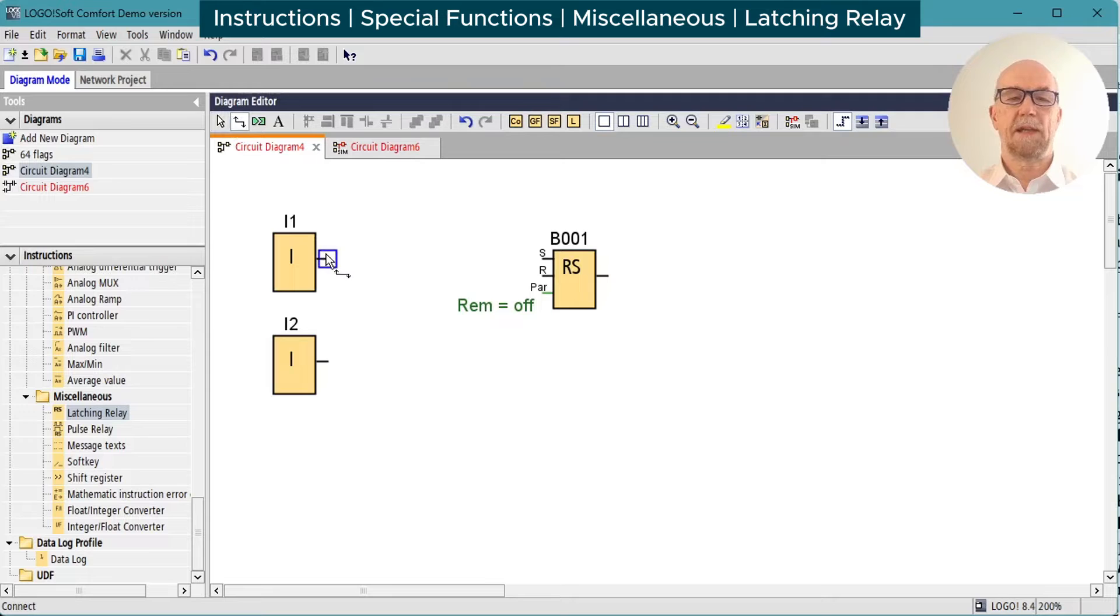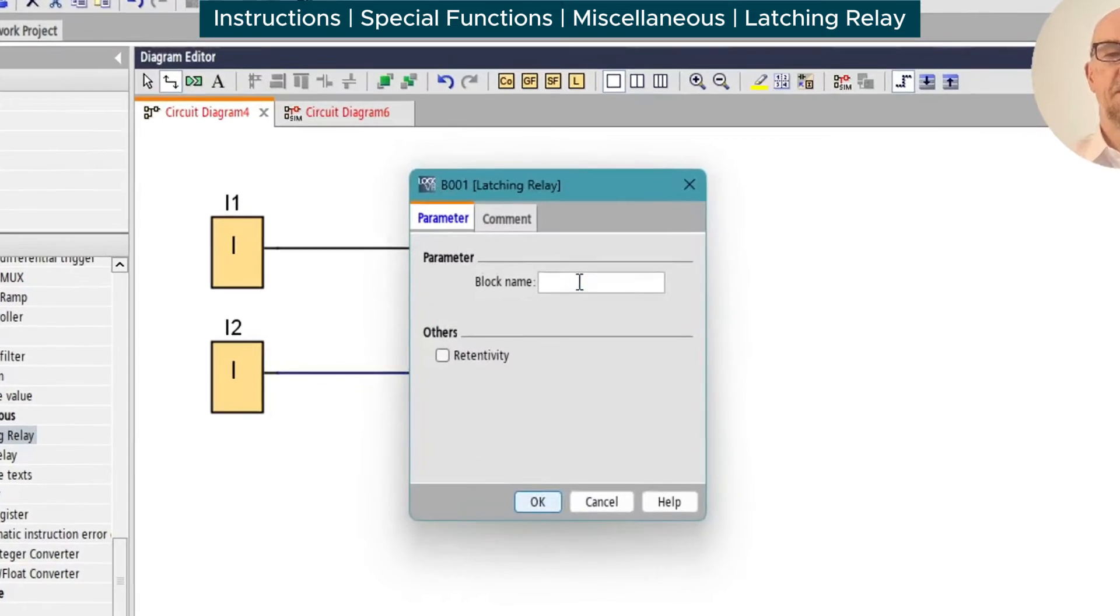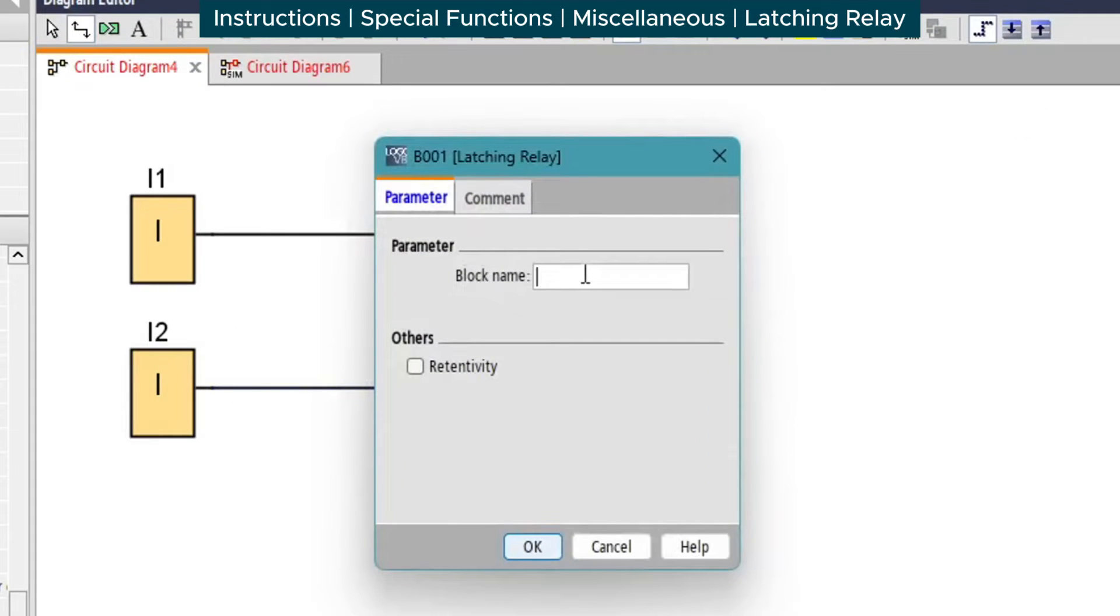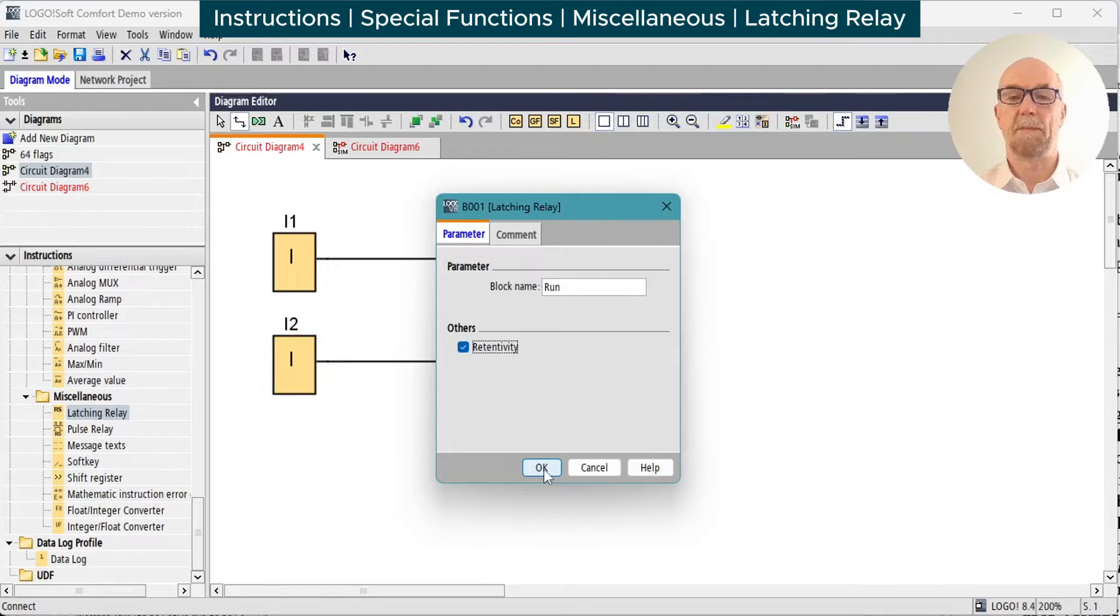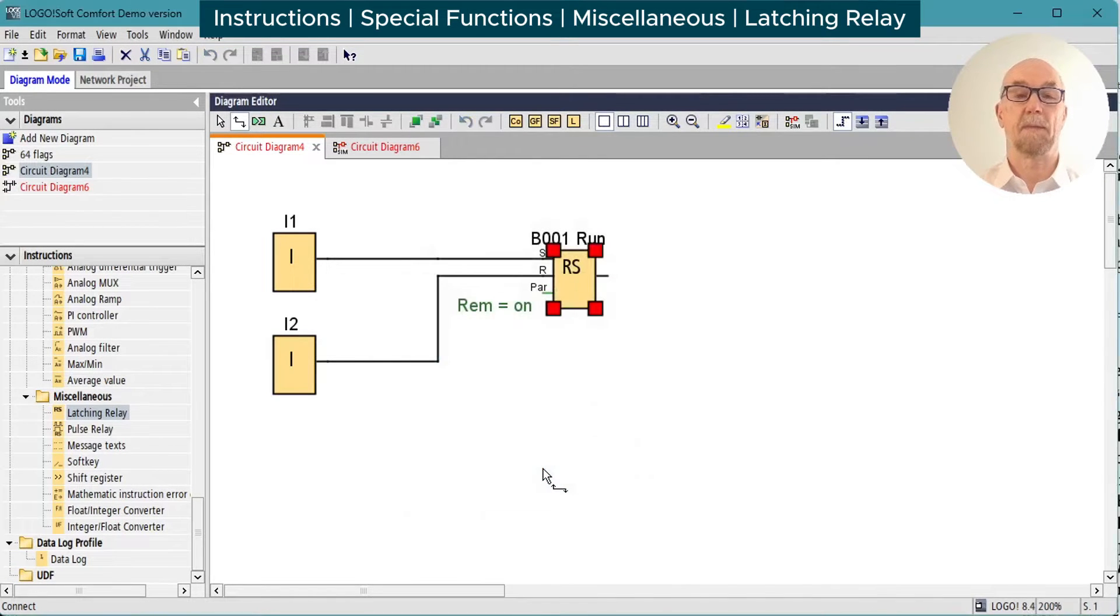The LOGO latching relay is a set-reset type and works very simply. Very little to set up other than give it a name and decide whether you want it retentive or not. We'll set retentivity on, which means that during a power cycle it will remember its status on power up.